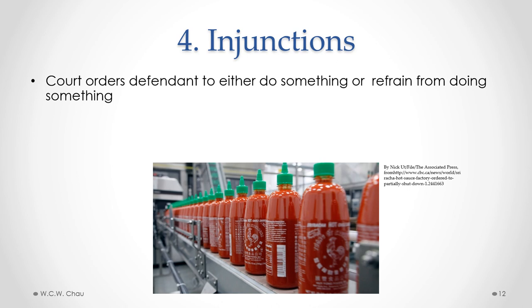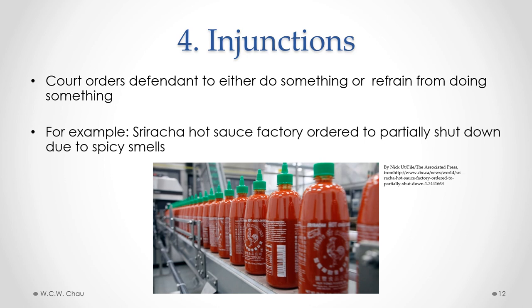The fourth type of remedy is an injunction, which we also discussed in Module 3D for breaches of contract. This is where a court orders a defendant to either do something or refrain from doing something. One example is the Sriracha hot sauce factory in California — people living nearby complained about spicy odors coming from the factory, so the town took the factory owner to court and had the court order the factory to be at least partially shut down. That was an injunction.